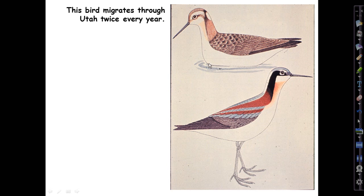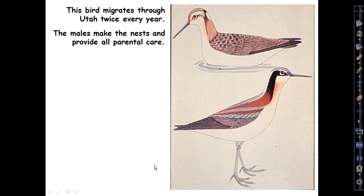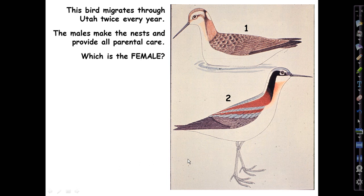Sex-reversed species occur in lots of different groups of animals. Here's a famous bird — how many of you know who it is? — that migrates through Utah twice every year; you can see them out on the lake feeding up for their journey north in the spring. Males make the nests and provide all the parental care in this species. So which is the female and which is the male? The brightly colored, ornamented individual should be the male, but in fact it's the female. And this dull, sensibly colored individual is the male.